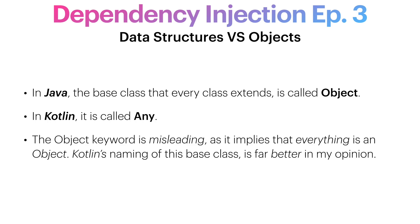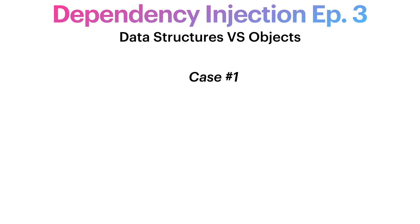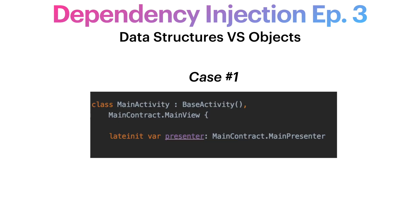Let's see a few examples to really grasp the difference between those two — to understand what we should inject and what we should encapsulate. Case study number one: in the traditional MVP, Model View Presenter, design pattern, the activity which takes the role of the view references a presenter. But who should create this presenter? To answer this question, we ask ourselves: is a presenter an object, or is it a data class? Does it expose behavior, or does it contain data? Well, a presenter is a clear case of an object — it is surely not a data structure — so we should inject it.